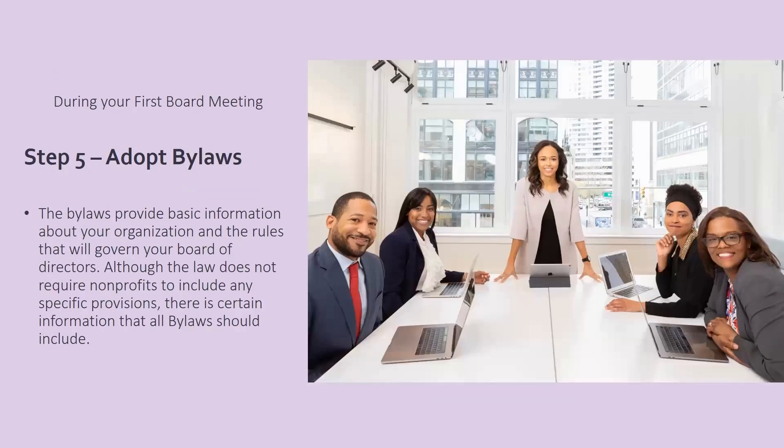Next, you will adopt the bylaws. Sometimes the founder will have the bylaws composed, but if not, he can hand them out at this time where the board can review them and vote on it at the next meeting. If he has them and the board has time to read through everything and approve everything and decide on all the items in the bylaws, then they can go ahead and vote and approve the bylaws at this time.